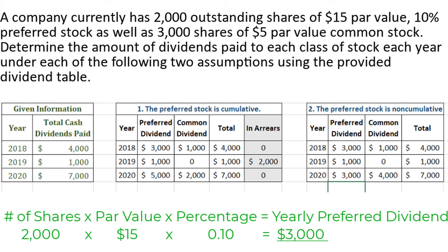A couple of comments on the charts we've created. Make sure that when the preferred stock is non-cumulative, your preferred dividend is never larger than the calculated preferred dividend — there's never any carryover from previous years, so $3,000 was the largest the preferred dividend could ever be. Always make sure your totals add up to the total cash dividends paid: $4,000, $1,000, and $7,000 each check out. If you're having difficulty, re-watch this video and pause along the way to make sure you understand how each number was calculated.